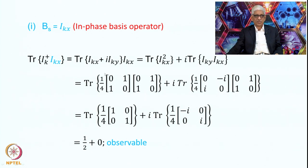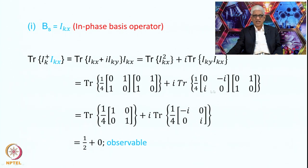The trace of IKx² gives ½ (since the diagonal elements are 1+1=2 times ¼), and the second term trace(IKy · IKx) gives zero. Therefore, the overall trace equals ½, which is non-zero. Therefore, IKx is observable. For IKy, doing the same calculation: trace(IK+ · IKy) = i·trace(IKy²) + trace(IKx · IKy). This gives i/2 plus zero, which is also non-zero. Therefore IKy is also observable.